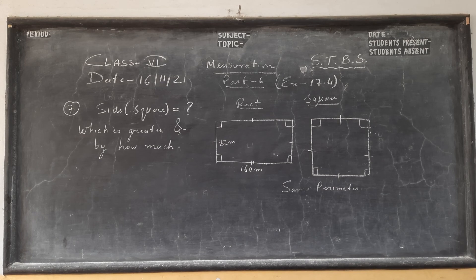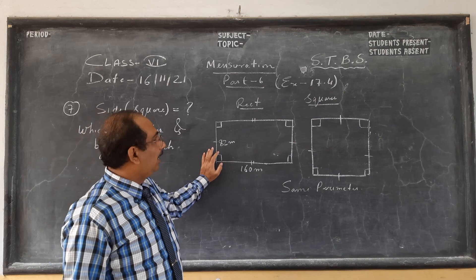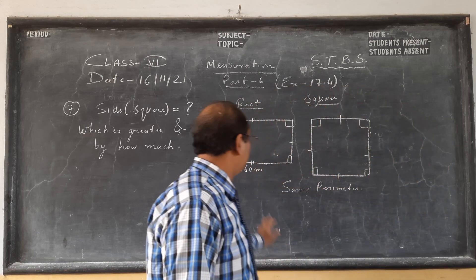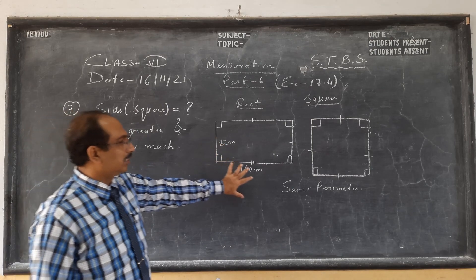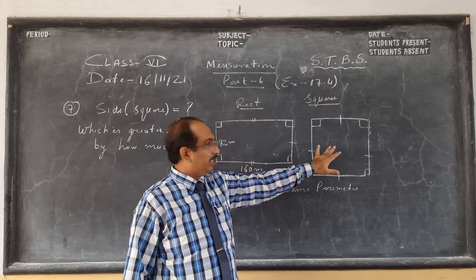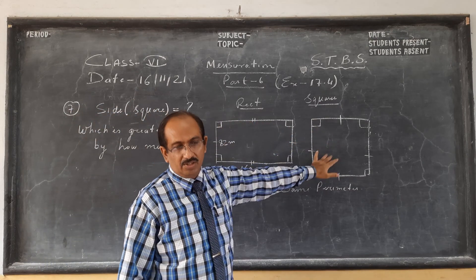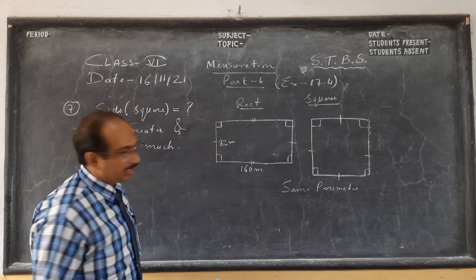So next we move on to question number 7. This is a very interesting question, because in the previous question we saw rectangle and square had equal area. Now in this question we have equal perimeter. A rectangle is given whose two sides are given; we will put the perimeters equal, find the side of the square, find the area of the square, and already we can find the area of the rectangle. We have to see which one is greater and by how much.